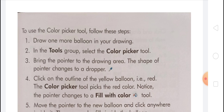To erase any part of a drawing, you can use the eraser tool. To use the eraser tool, select the eraser tool in the tools group. Move the pointer onto the drawing area — the pointer shape changes to a square. Now click and drag the pointer over the area you wish to erase.